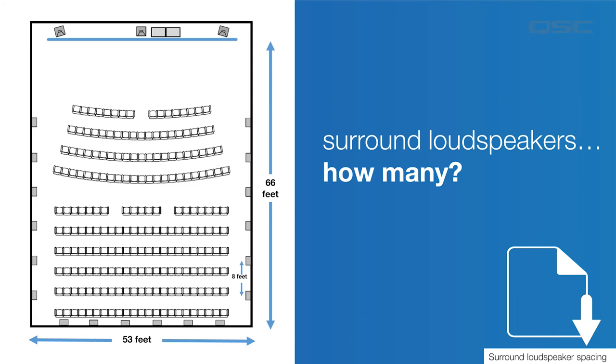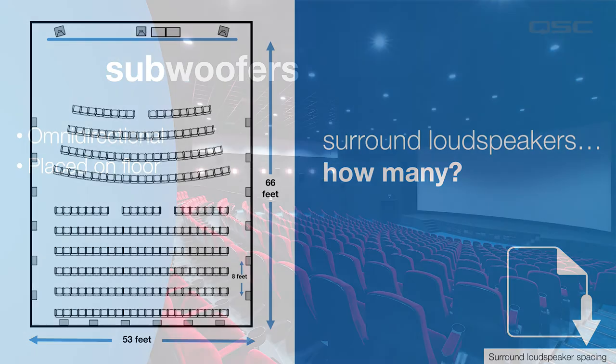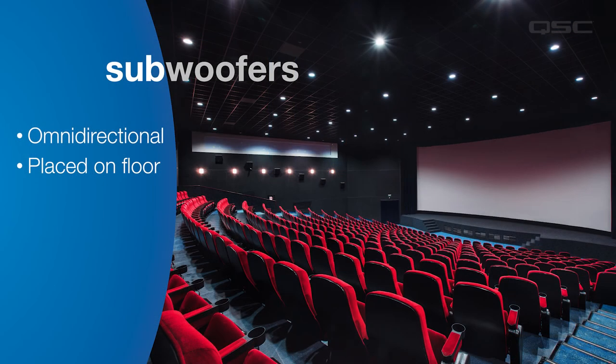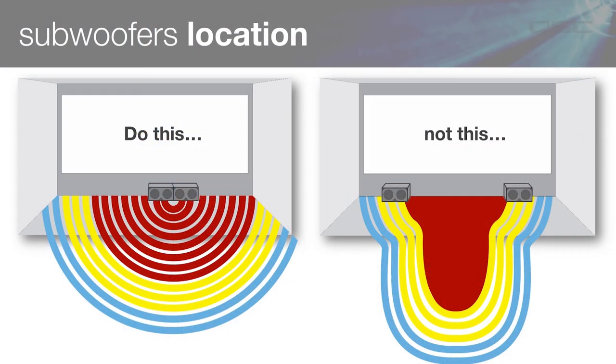The exact location of subwoofers is a little less critical because they're omnidirectional, but typically they're located on the floor below the screen with acoustically transparent draping to hide them from the audience. They should be placed slightly off-center to avoid creating a sound alley.